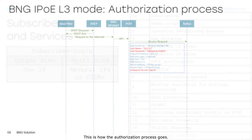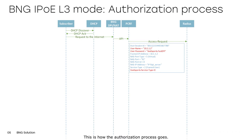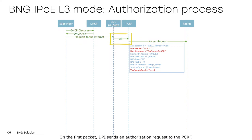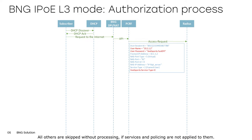This is how the authorization process goes. After receiving an IP on an external DHCP server, the subscriber sends a request to the internet. On the first packet, DPI sends an authorization request to the PCRF. This is performed only for those IPs that are specified as local. All others are skipped without processing, if services and policing are not applied to them.